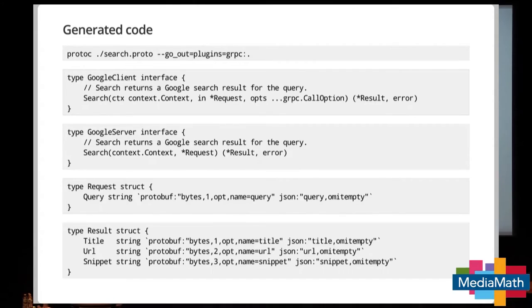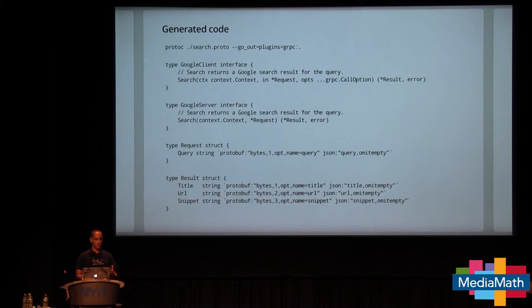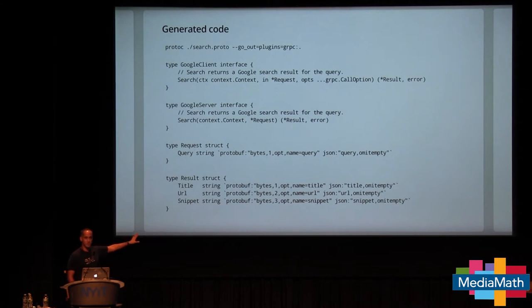The generated code uses the protocol compiler protoc to produce a search.pb.go file giving us all stub code for both client and service sides. On the client side, we have an interface — GoogleClient — with a search method taking a context, a star-request, and some call options, returning a result and an error. GoogleServer is an interface we implement, mirrored on both sides. The request struct has the query as a string — it's entirely flat with no pointers. Proto3 gives us flat structs for messages. The result is also flat with title, URL, and snippet. There's a JSON encoding built in.